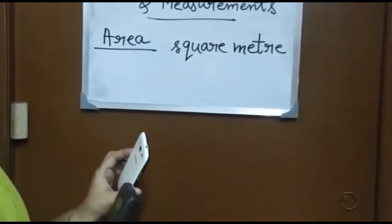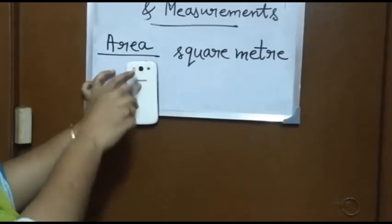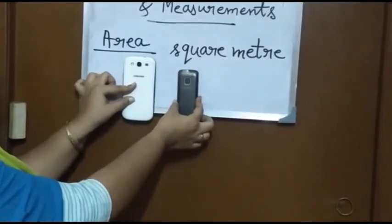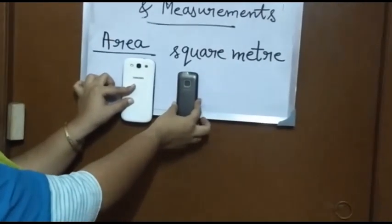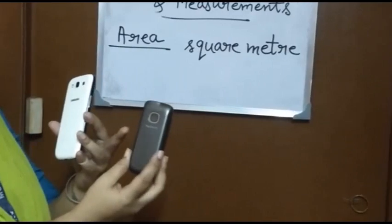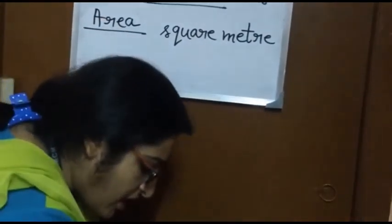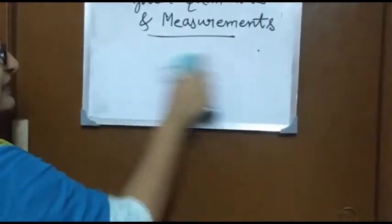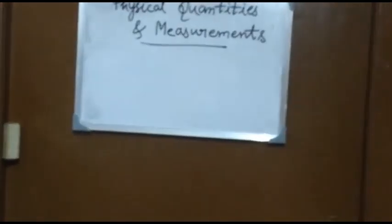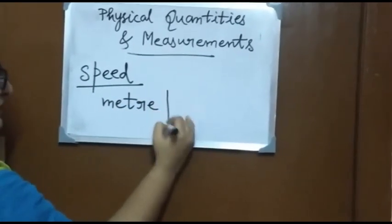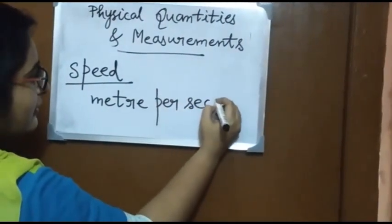Here I have two mobile phones. The white phone is occupying more surface and the black phone is occupying less surface on this board, so the area of the white phone is more than the area of the black phone. Speed is the rate of change of distance with time. The SI unit of speed is meter per second.